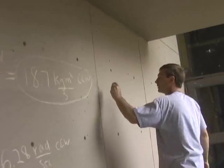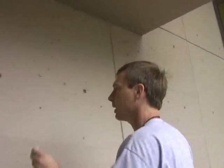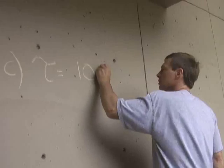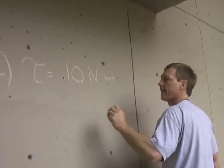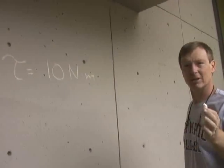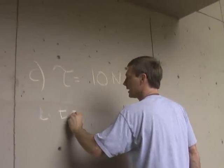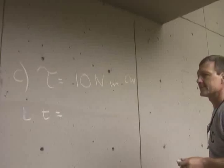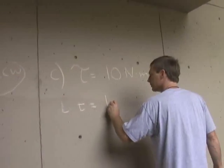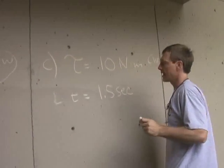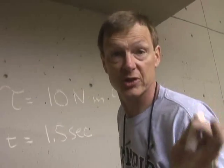Now let's move to part C. We're going to apply a torque of 10 newton meters, and we're going to apply that torque clockwise — let's slow the thing down. We'll apply it for a time of one and a half seconds. Let's find out what the change in angular momentum is, which is the same as the angular impulse.